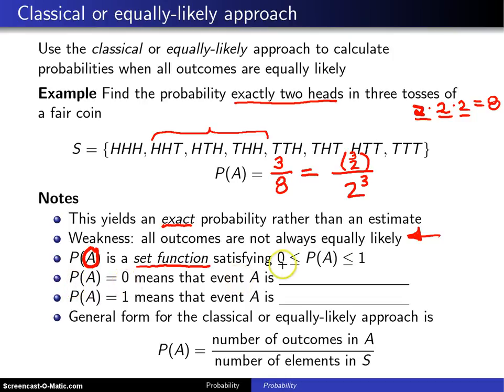If you ever get a zero for a particular event A, that would mean that the event is impossible.